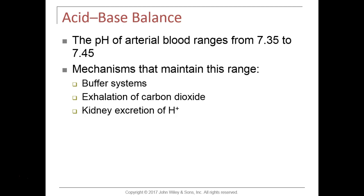The pH range of blood is 7.35 to 7.45 — a very tight physiological limit. If the pH of blood falls below 7.35, we become acidic, which is called acidosis. If the blood pH goes above 7.45, that means we are alkaline or basic, which is called alkalosis. We have to stay within that range of 7.35 to 7.45.